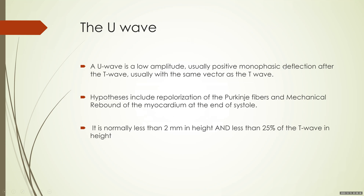The U-wave is a low amplitude, usually positive monophasic deflection after the T-wave, with the same vector as the T-wave. If T-waves are positive, the U-wave is also usually positive; if the T-wave is negative, the U-wave also becomes negative. We are not exactly clear why the U-wave occurs — some say it is due to repolarization of the Purkinje fibers, others say it is due to mechanical rebound of the myocardium at end-systole. It is a small wave, less than 2mm and less than 25% of the height of the T-wave.